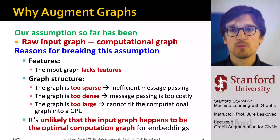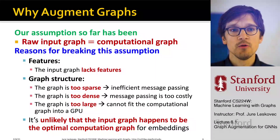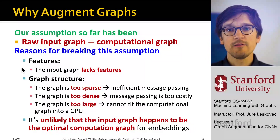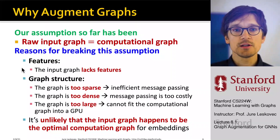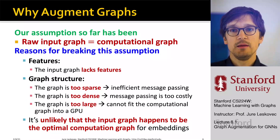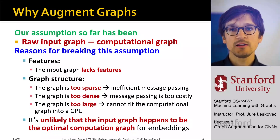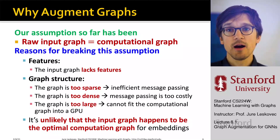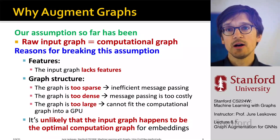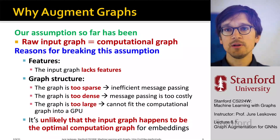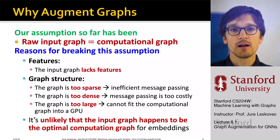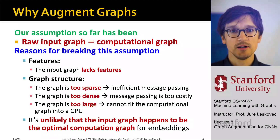There are many good reasons why we would want to break this assumption. We would want to break it at the level of node features. Many times, for example, input graphs may lack features or attributes. Perhaps we want to sometimes help the neural network — features may also be hard to encode, so we may want to help the neural network learn a given concept more easily.